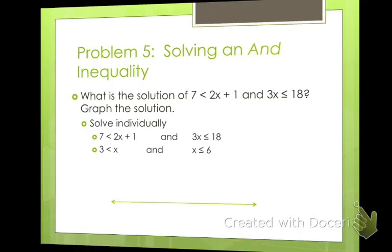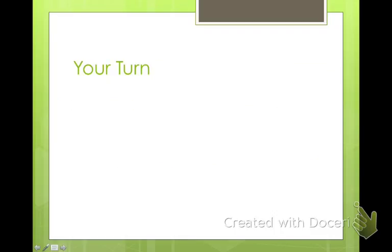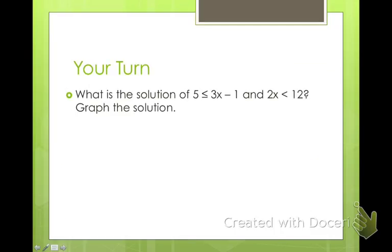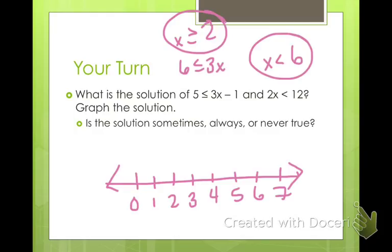So I want you to go ahead and solve and graph this next one by yourself. I know you can do it. Alright, so for this one you should have solved it and got X is greater than or equal to 2, and X is less than 6. So you start on 2, it's inclusive, so you make it a closed circle. 6 is an open circle, and you shade everything in between. So this is sometimes true, because it has to be between 2 and 6. 2 inclusive, 6 non-inclusive.